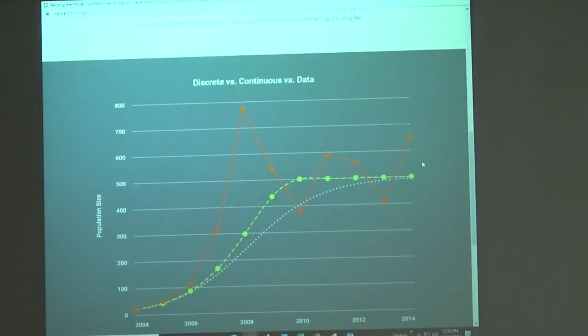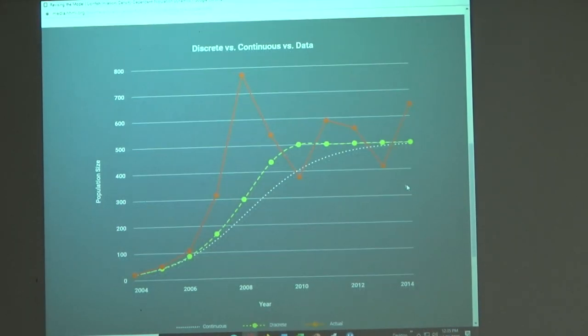So again we get an auto-populated graph where we have three different examples. This was the example when we use this mathematical model for continuous logistic growth and then this is the discrete. You can see that they have that same shape. That same predictive shape of an increase in growth rate until you reach a certain point in time and then you start to decrease.